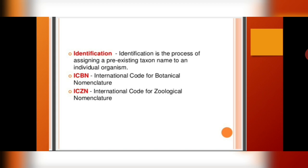The ICBN and the ICZN. ICBN is the International Code for Botanical Nomenclature, and ICZN is the International Code for Zoological Nomenclature — one for plants and the other for animals.